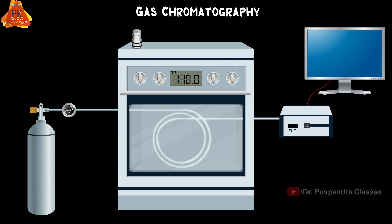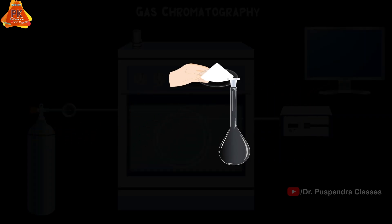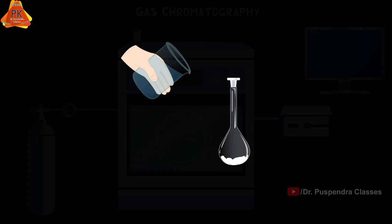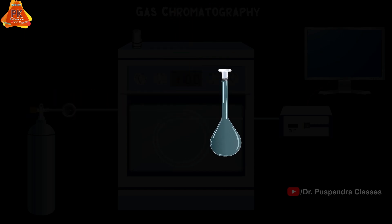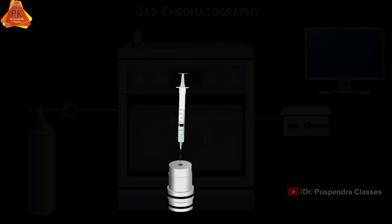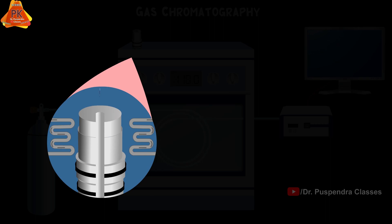If the sample is gas, then a gas syringe will be used. If the sample is solid, then it will be dissolved in suitable liquid and converted into liquid sample. If the sample is liquid, we will inject it through micro syringe at the sample inlet. If gas sample is injected, it will directly go towards the column along with mobile phase for elution.